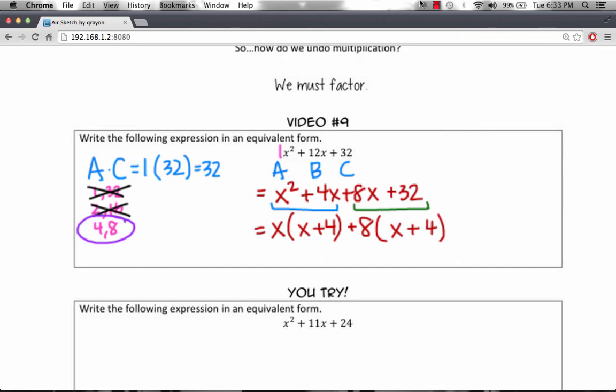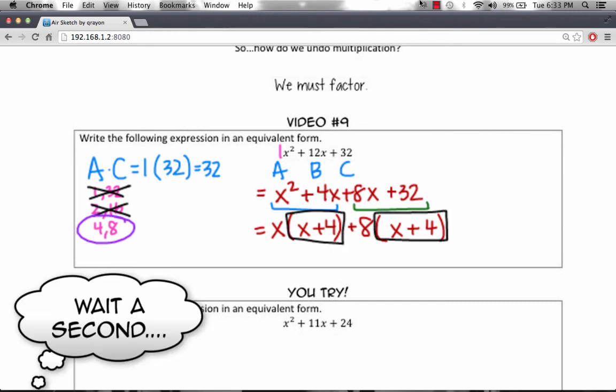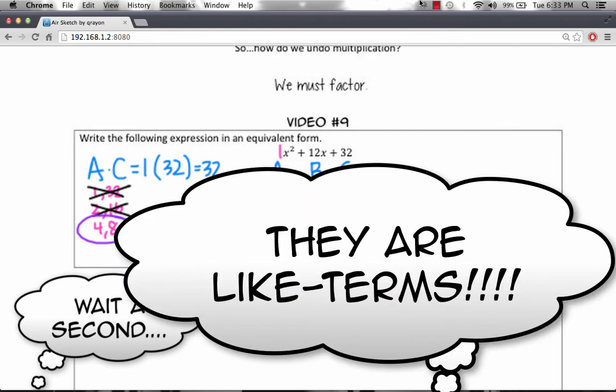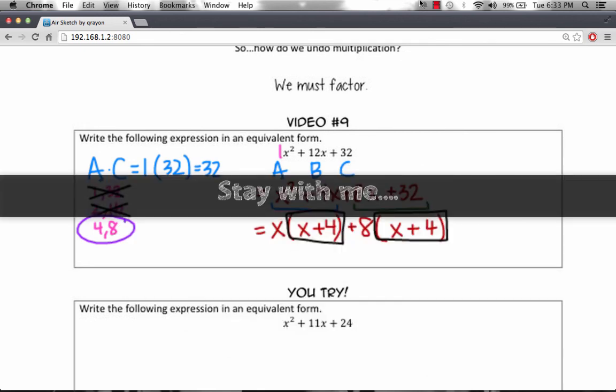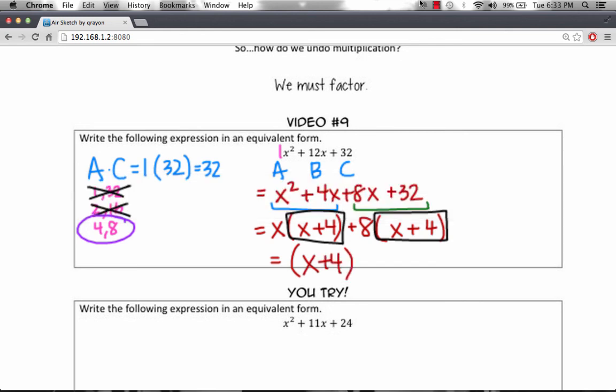Now, check this out. We have an x plus 4 and an x plus 4. Both these terms have an x plus 4 in common. So, similar to what we did previously, we're going to factor out an x plus 4. So, if we factor out an x plus 4, all that's going to be left is x plus 8. And that is what's going to fill in our other set of parentheses.